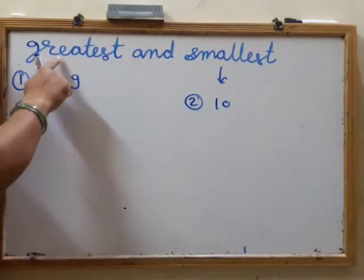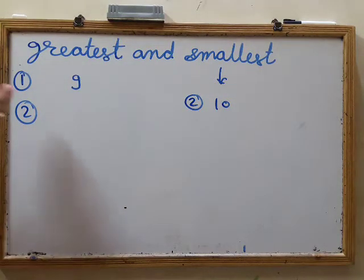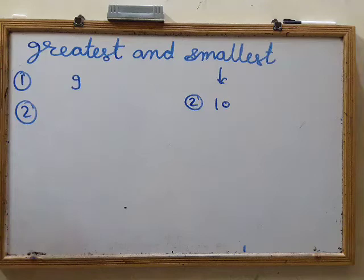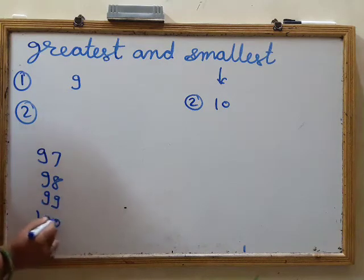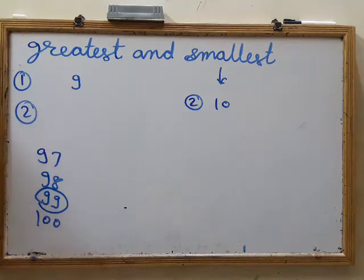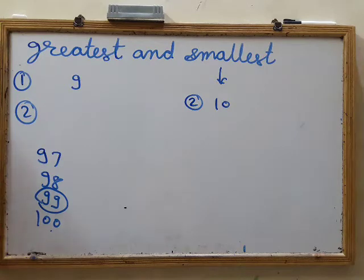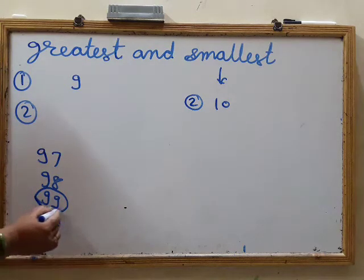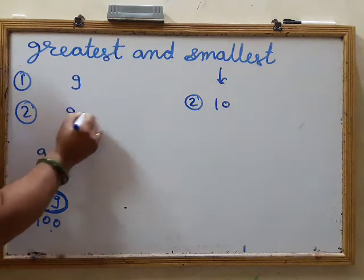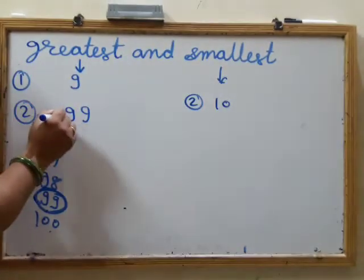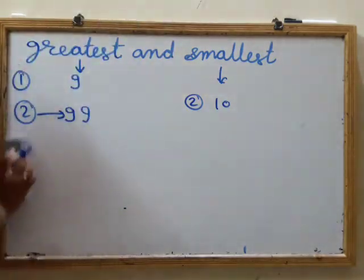What about the greatest two-digit number? When we count from 10 we go to 20, 30, 40, 70, 90, then 91, 92, 93, 94, 95, 96, 97, 98, 99, and then 100. After 99 all numbers are three-digit, four-digit, or five-digit. So 99 is the greatest two-digit number.